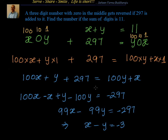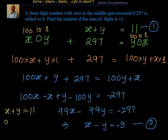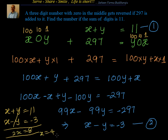What else do we have? We have another condition — this is the second equation. The first equation tells us x plus y equals 11. Let me write down both equations and solve them. With x plus y equals 11 and x minus y equals minus 3, adding them gives 2x equals 8, so x equals 4.